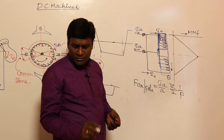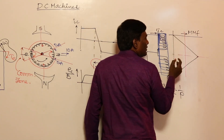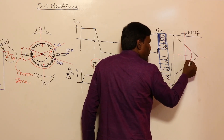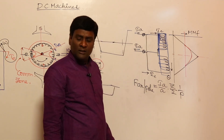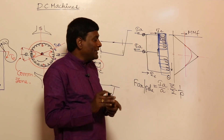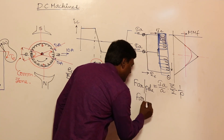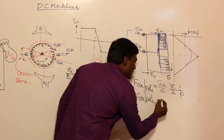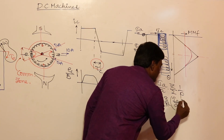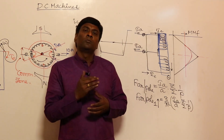If the triangular armature MMF waveform is converted into a sinusoid using Fourier series, the fundamental peak of armature MMF is (8/π²) × FAR, where FAR = (Ia/A) × (Z/2) per pole. Depending upon this, we are going to solve problems in the next session.